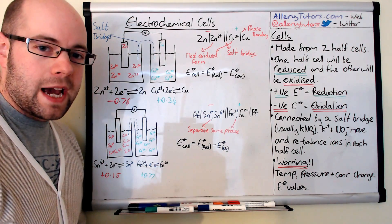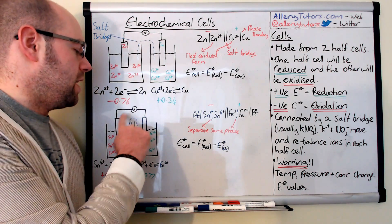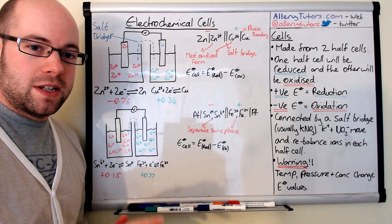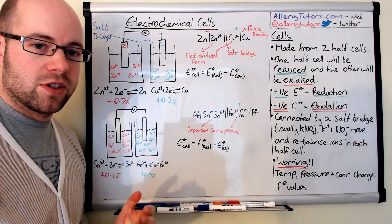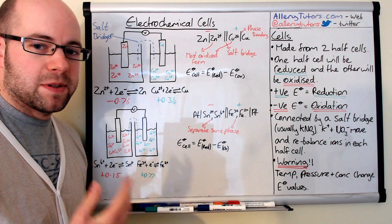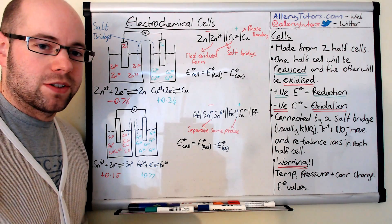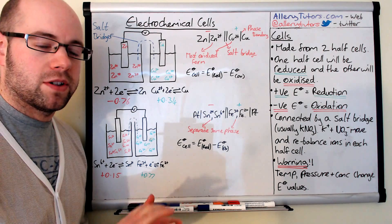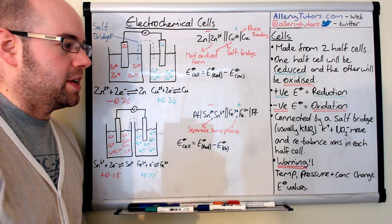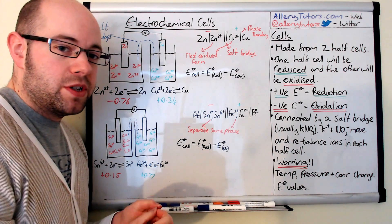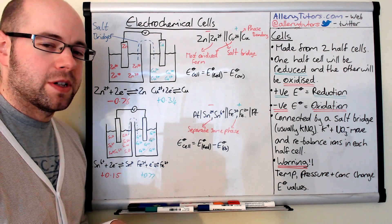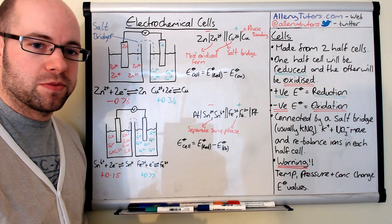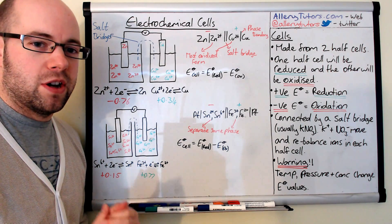Full cells are connected by salt bridges — these are the blue dotted lines you're seeing here. Salt bridges are basically just bits of filter paper dipped into a very saturated salt solution. Normally the salt of choice is potassium nitrate, which is really, really soluble and can move easily across the filter paper. Its main purpose is to re-address ion balance in the two half cells.